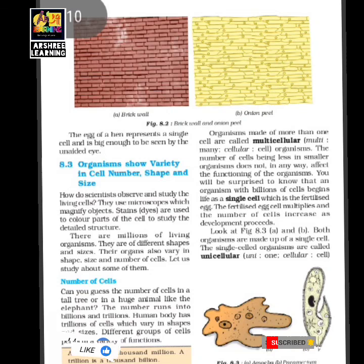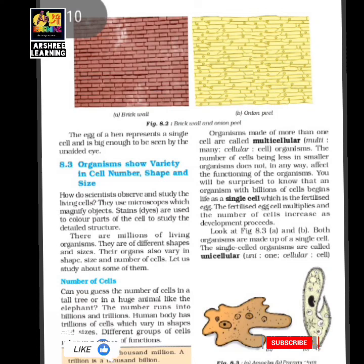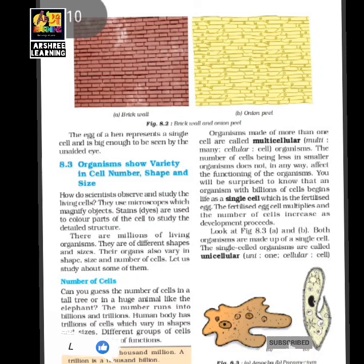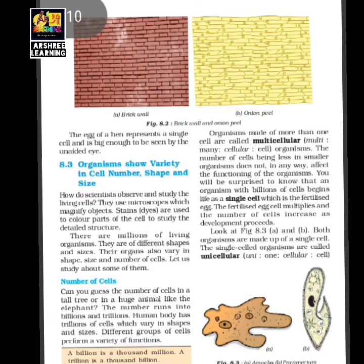The next topic is that organisms show variety in cell number, shape, and size. Living organisms have different types of cells with different shapes and sizes. Scientists observe and study living cells using microscopes. There are millions of living organisms with different shapes and sizes, and because they have different shapes, they have different types of cells. There are also different types of cells within the organs of an organism.